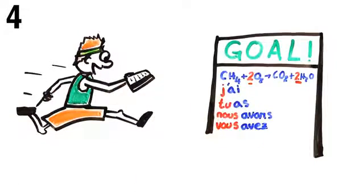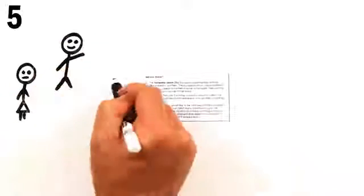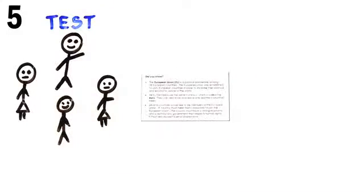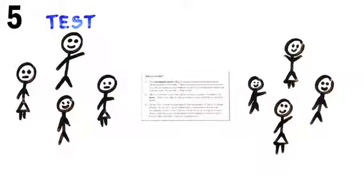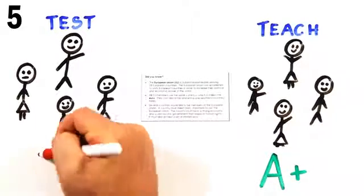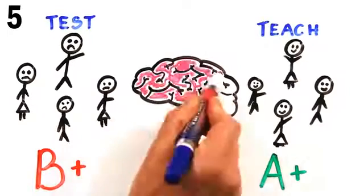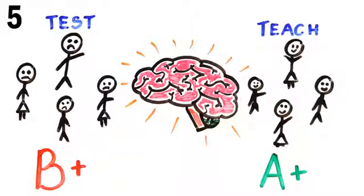If you can't explain it simply, then you don't understand it well enough. In studies where individuals were asked to learn a passage, and then half were told that they would be tested on the material, while the other half were told they would have to teach it to other students, participants expecting to teach it did much better at understanding the main points. When you're expecting to teach, your brain organizes the information in a more logical, coherent structure.